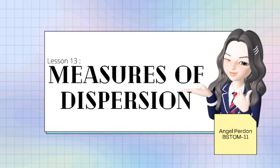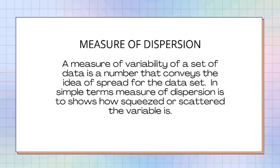But before that, what is measure of dispersion? The measure of dispersion is the measure of variability of a set of data — a number that conveys the idea of spread for the data set. In simple terms, measure of dispersion shows how squeezed or scattered the variable is.